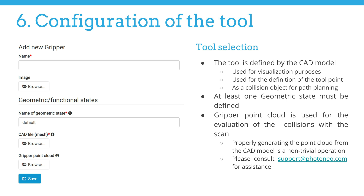The option of geometric state is relevant to those tools which change their physical appearance. A good example of such a tool would be a two-finger gripper — it looks differently when the fingers are closed compared with when the fingers are open. However, if you use a vacuum tool, a magnetic gripper, or a tool which does not change shape significantly while open or closed, the default geometric state should be sufficient.